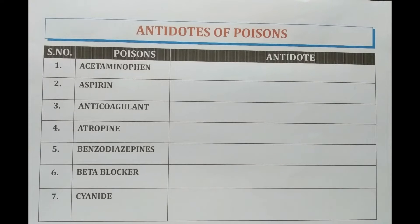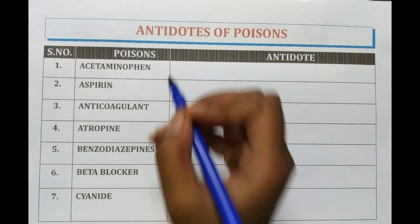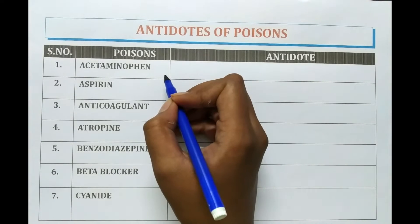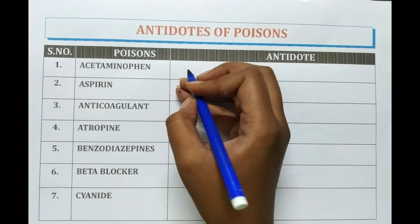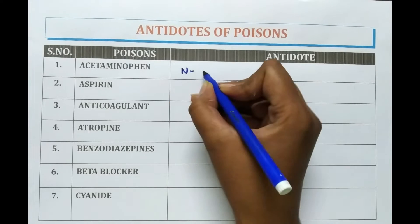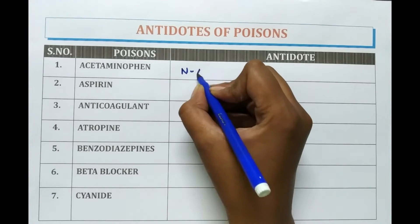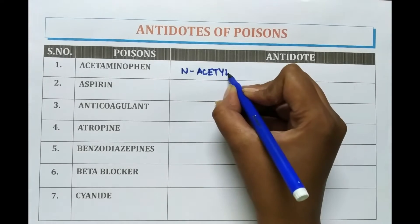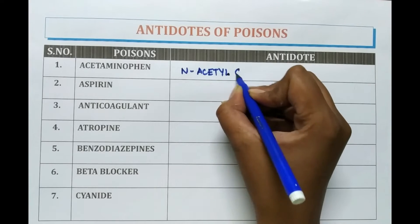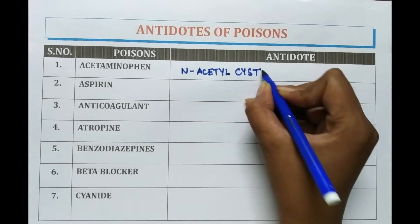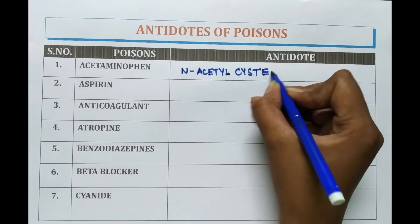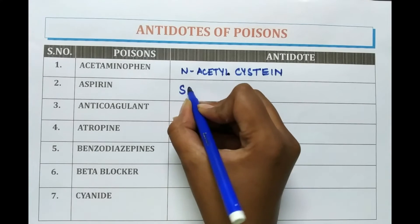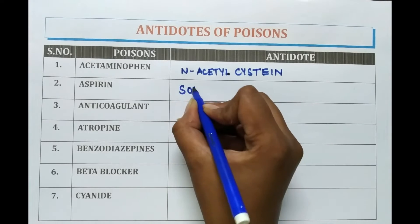First is Acetaminophen. When Acetaminophen is excessively used or in case of poisoning, N-acetyl cysteine is used as its antidote. In case of aspirin, sodium bicarbonate is given.